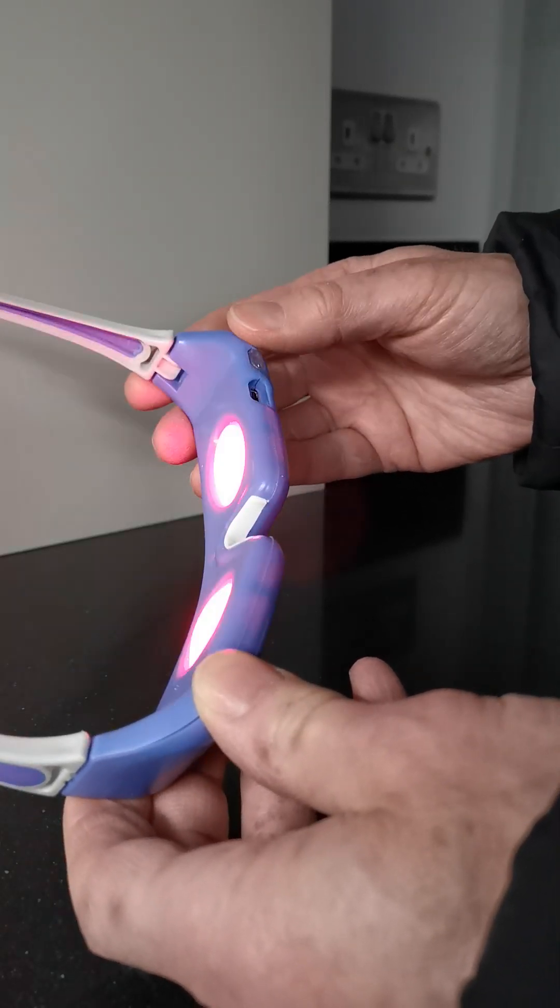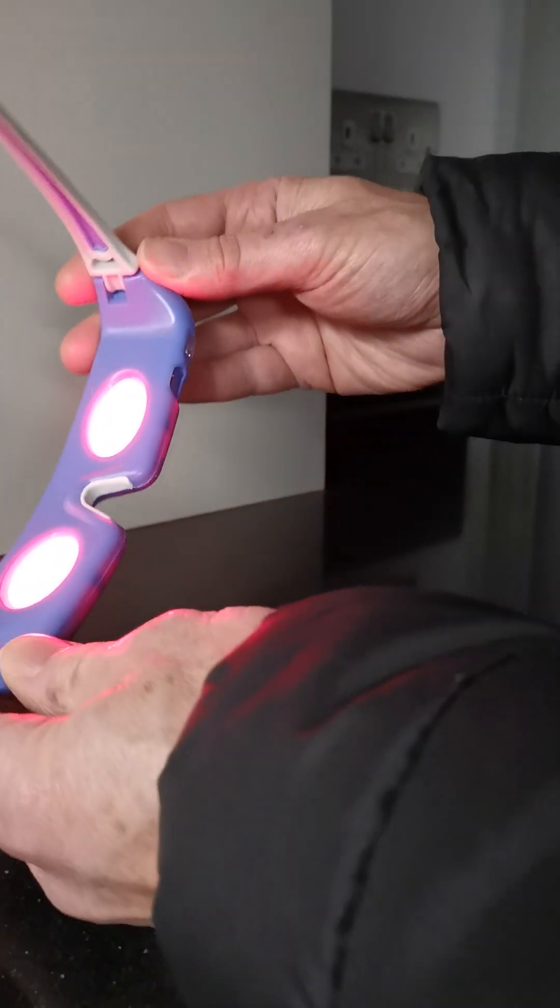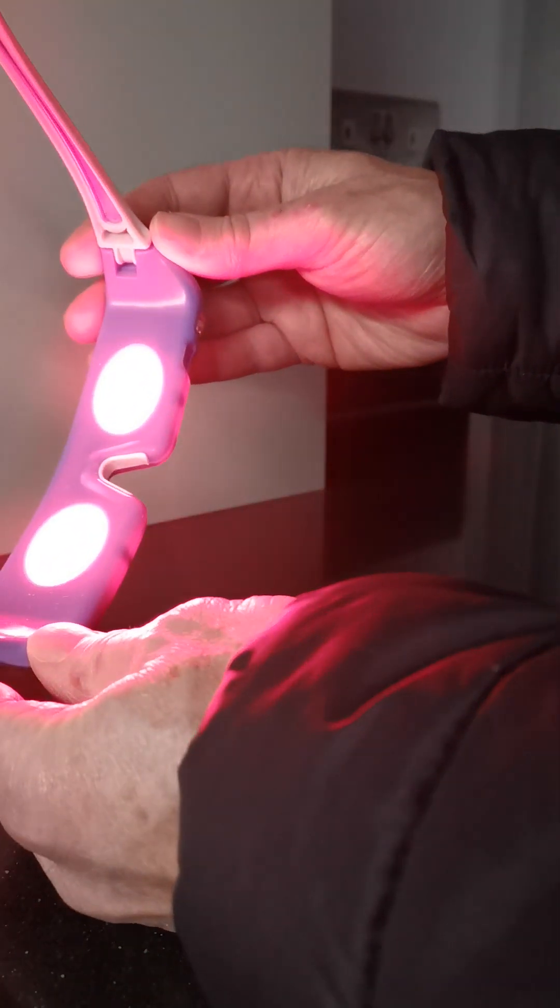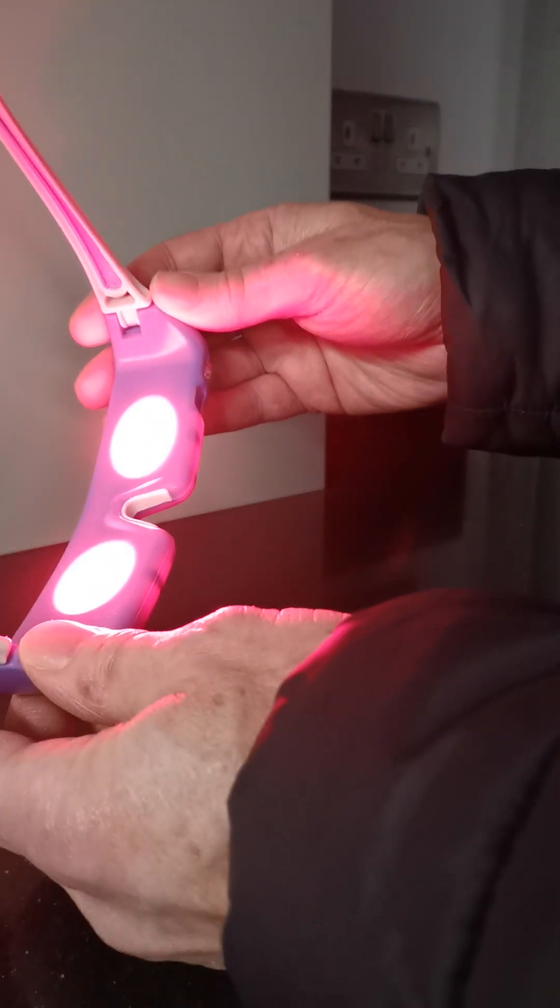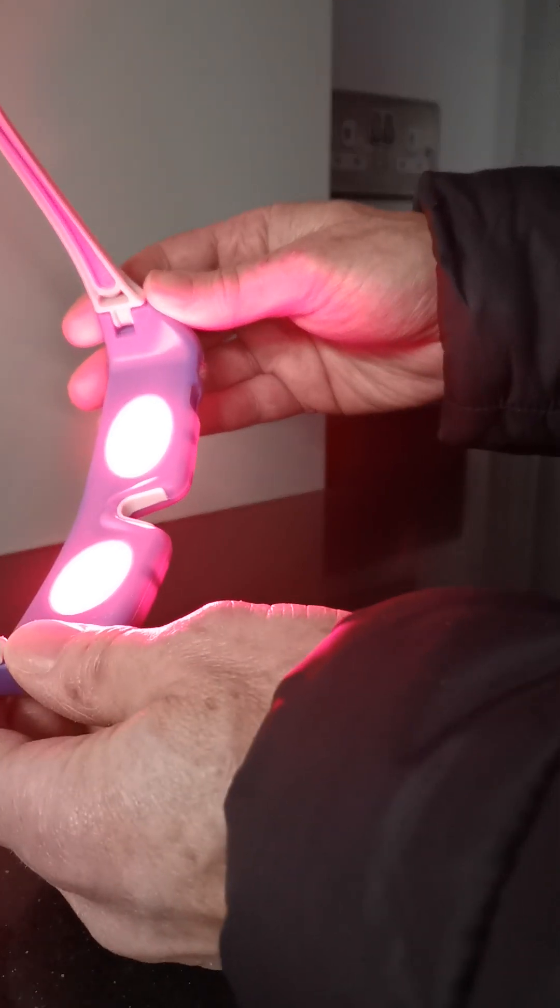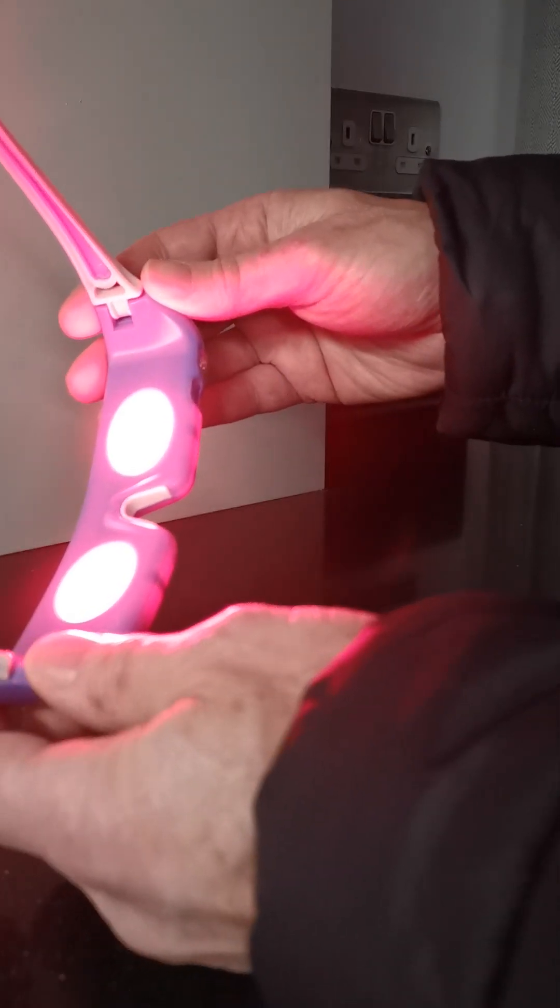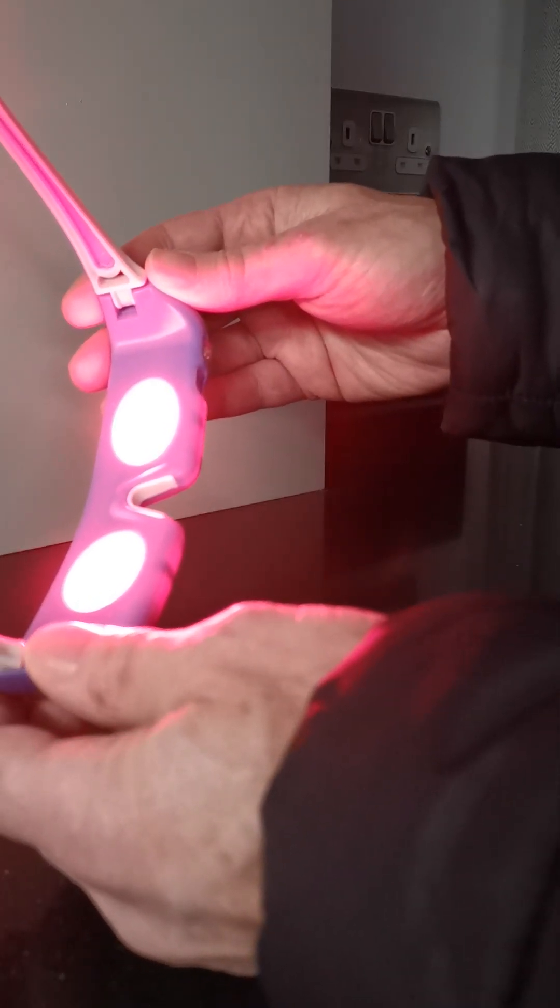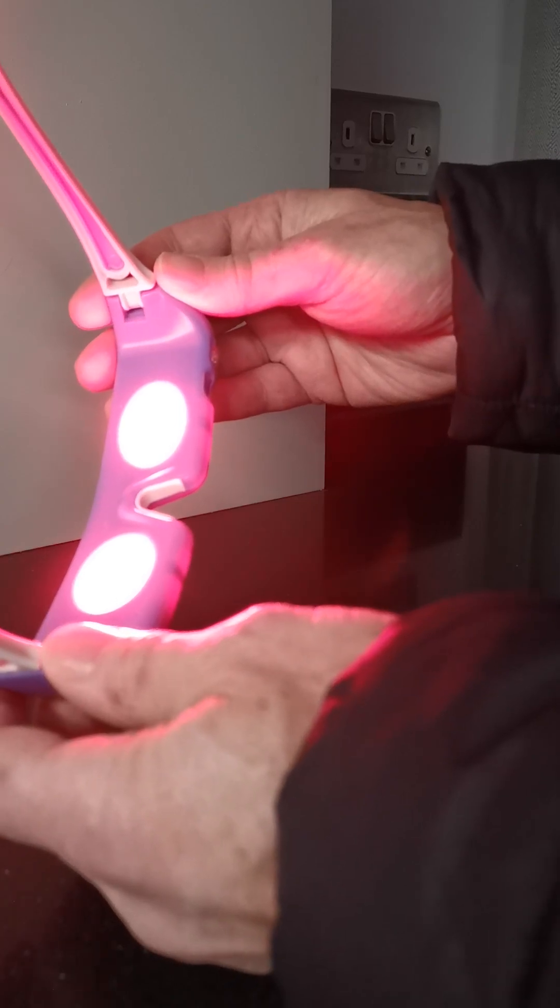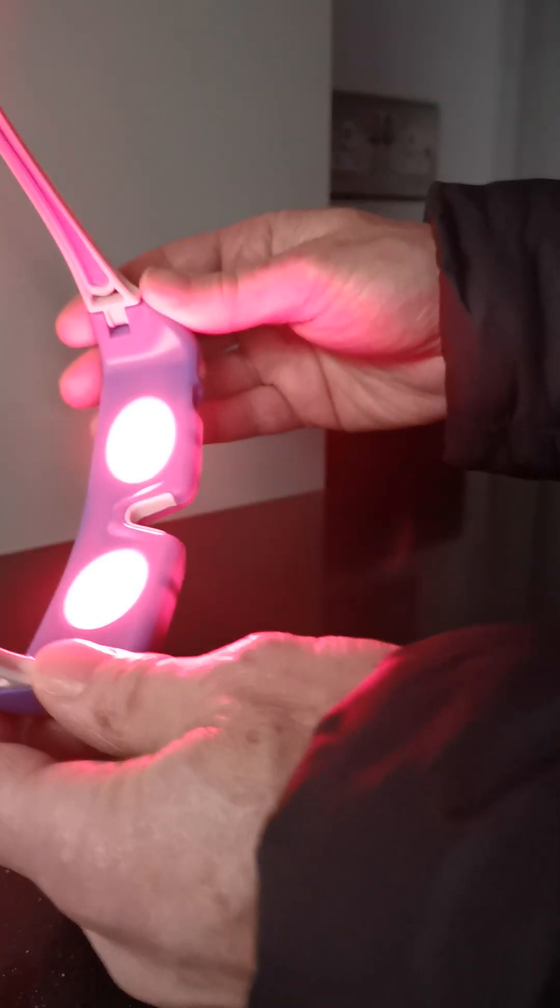You turn them on very simply by pressing this switch on the bottom. You can see the red lights coming on there. You put them on, you wear them. They will automatically cut off after three minutes. You can have your eyes open or closed because having your eyes closed makes hardly any difference to the amount of light going into your eyes.